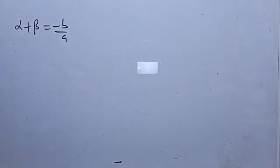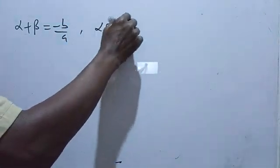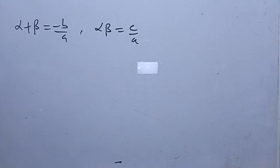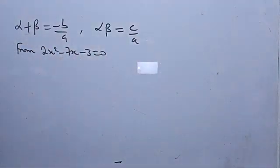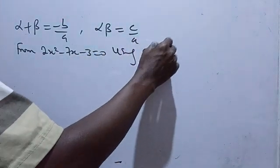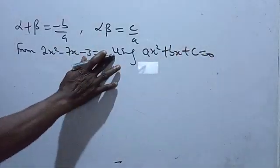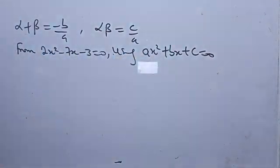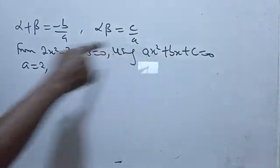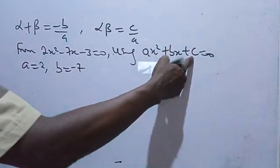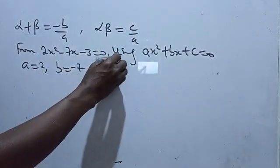First of all, let us represent the given equation using alpha and beta. You know that alpha plus beta, the sum, equals minus B over A, while the product alpha beta equals C over A. From 2x squared minus 7x minus 3 equals 0, comparing with Ax squared plus Bx plus C equals 0: A equals 2, B equals minus 7, and C equals minus 3.